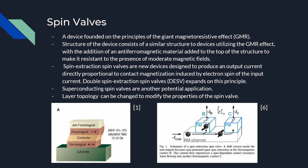A common example of the spin valve is the spin extraction spin valve, or SESV. In this configuration, electrons flow from the non-magnetic contact through the non-magnetic channel to the two ferromagnetic contacts B and C. The current extracted at B is spin dependent, so this changes the spin polarization in the non-magnetic material. As a result, contact C becomes magnetized. Changes in the contact magnetization change the contact resistance, which changes IC based on the spin polarization of the drift current developed by contact B.